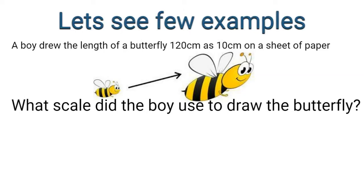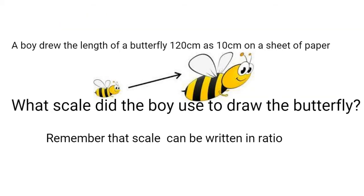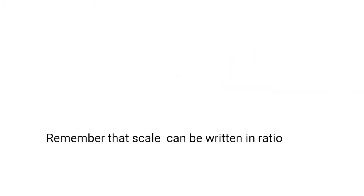Now let's look at some examples. A boy drew the length of a butterfly — 120 centimeters — as 10 centimeters on a sheet of paper. What scale did the boy use to draw the butterfly? Remember that scale can be written as a ratio. The reduced length is 10 centimeters while the actual length is 120 centimeters.